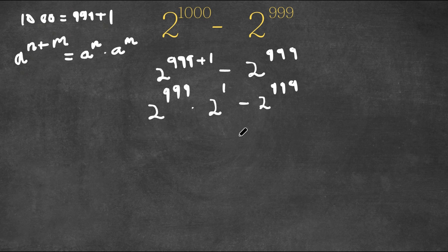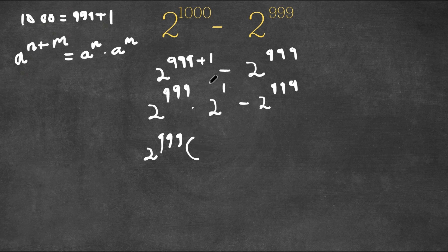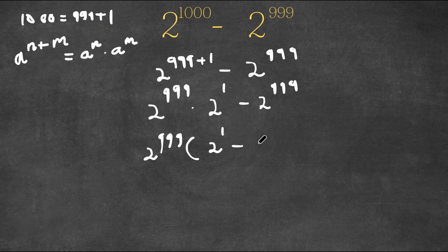And now because both of these terms have 2 to the power of 999 in them, I'm simply going to factor that out. So if I factor out 2 to the power of 999, I get 2 to the power of 999 times 2 to the power of 1 minus 1, since 2 to the power of 999 divided by 2 to the power of 999 is 1. So now we have 2 to the power of 999 times 2 to the power of 1 minus 1.